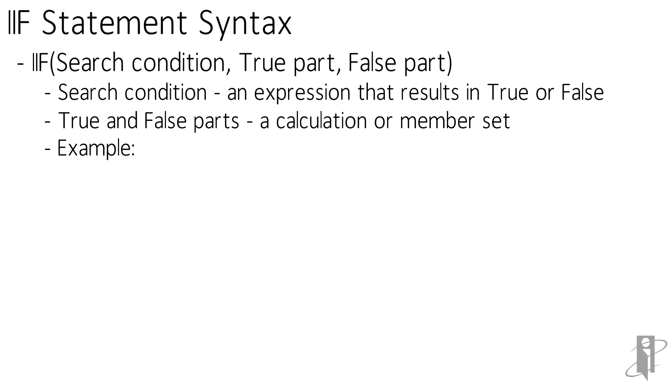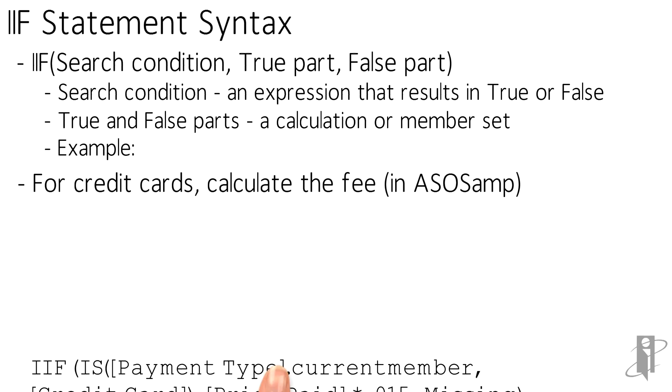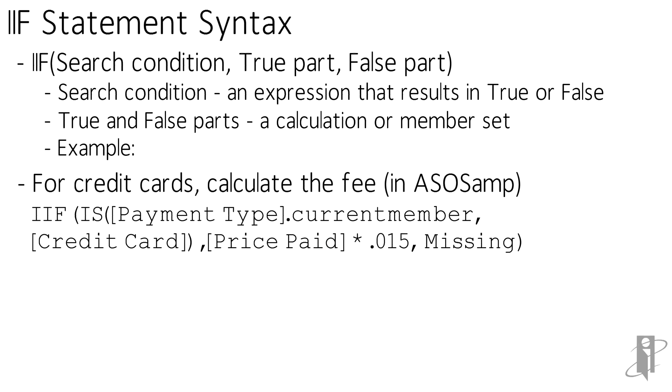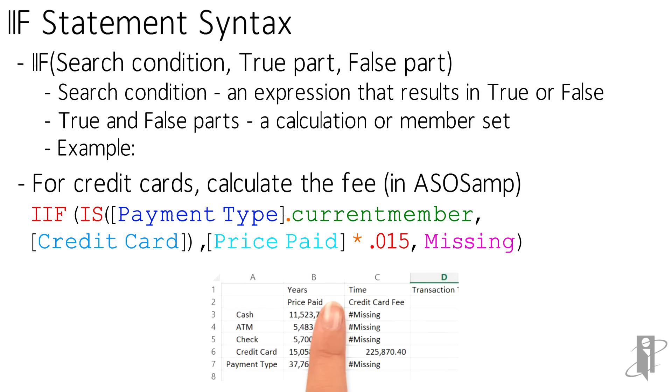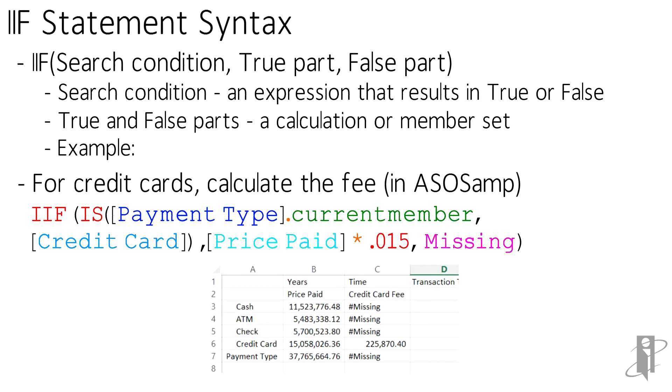For example in ASOSAMP, I want to calculate for credit cards what the fee is. In this case the fee is going to be 0.015 of the price paid. We're using the if condition: if it is payment type current member credit card, so we only want to do this for credit cards, then the true condition is going to be price paid times 0.015, and otherwise we're going to set it to missing. As you can see in my example when I retrieve the data it looks good.